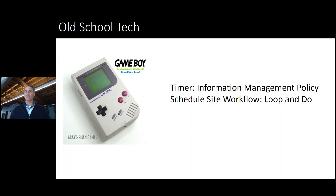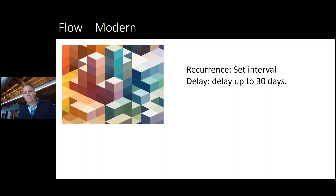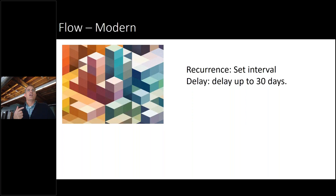As I'm looking into Flow — our new modern workflow engine — I wonder how this works. It works a little bit differently. I found there are two items we can use. There's a new trigger called recurrence. That's basically like the scheduled workflow — kind of a one-for-one relationship. I can set, hey, on an annual basis, on a monthly basis, on a daily basis.